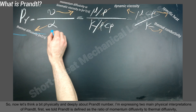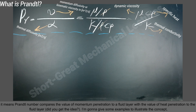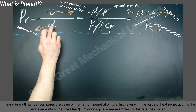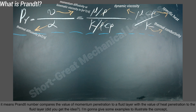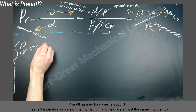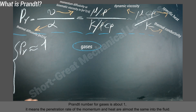There are two main physical interpretations of Prandtl number. First, Prandtl is defined as the ratio of momentum diffusivity to thermal diffusivity, meaning it compares the value of momentum penetration into a fluid layer with the value of heat penetration into the fluid layer. For example, the Prandtl number for gases is about 1, meaning the penetration rate of momentum and heat are almost the same into the fluid.